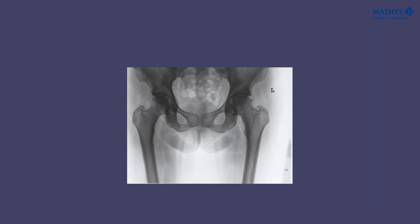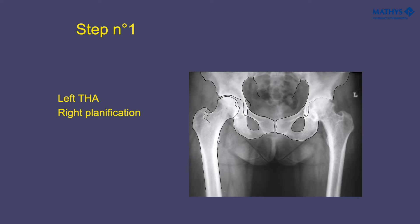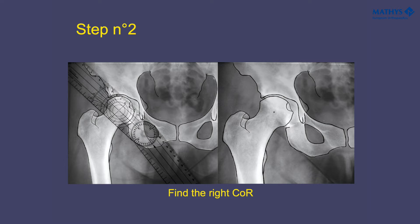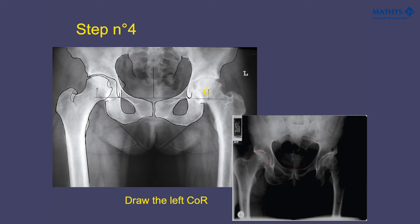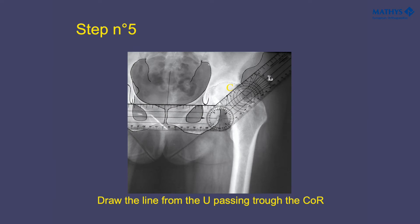Here is an example of a simple case of osteoarthritis on the left side. For a standard planification, the first step is to go to the contralateral side — here the right side — draw the right center of rotation, draw the U radiological line, and then report to the disease side to draw the left center of rotation and draw the line from the U passing through the center of rotation.